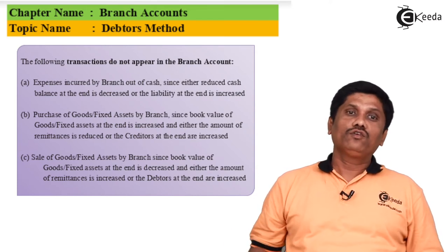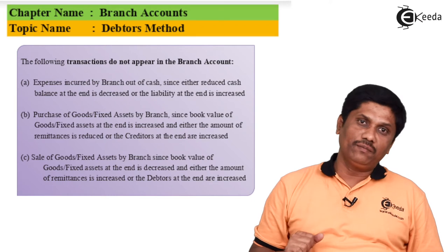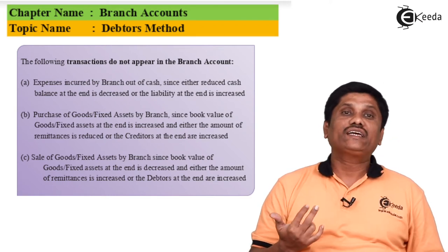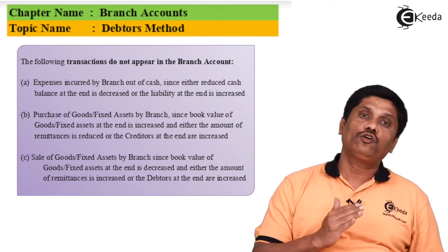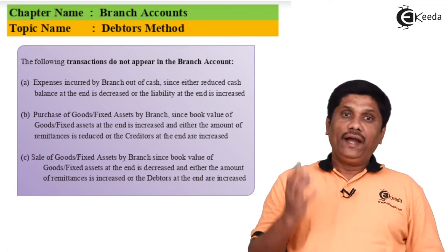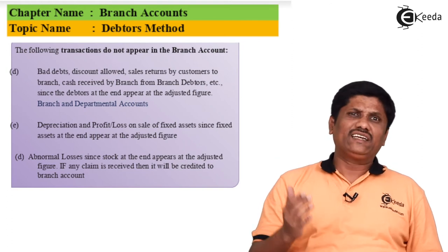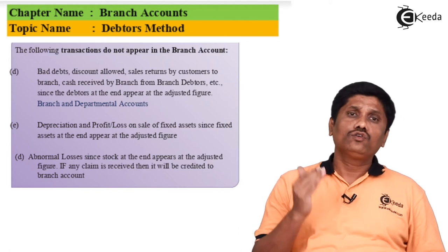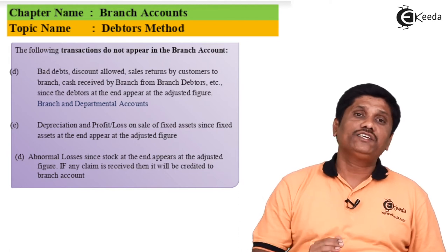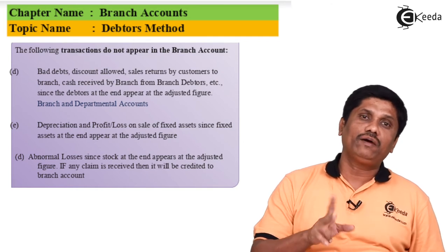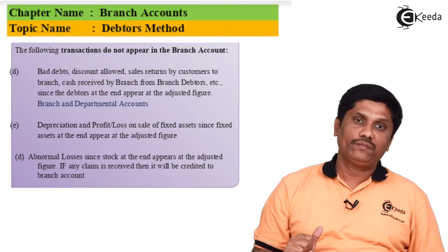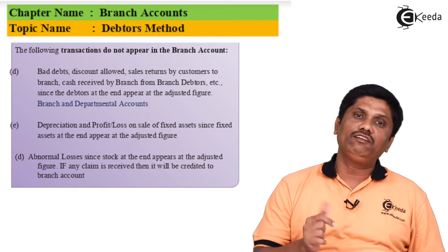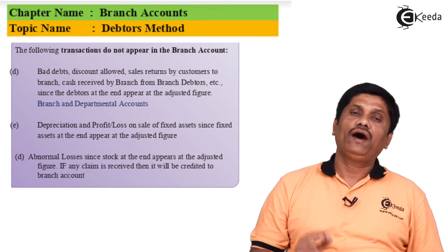Similarly, sale of goods by the branch and sale of fixed assets by the branch are not recorded in the branch account by the head office, because they automatically get adjusted in cash balances, or in debtor and creditor balances. Transactions with debtors — such as discount allowed, sales returns by debtors to branch, and goods sold by branch to debtors — will also not appear directly in the branch account, as they are taken care of by a memorandum debtors account and are indirectly adjusted.